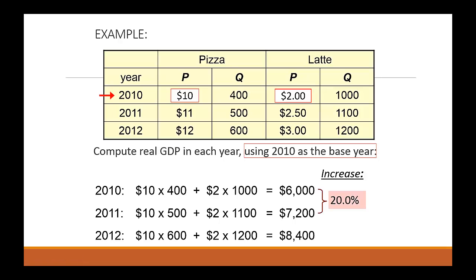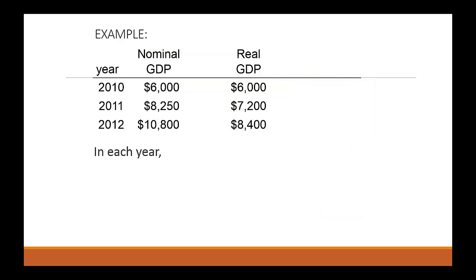Real GDP increased 20% in 2011, and it increased a little under 17% in 2012. Notice that nominal and real GDP are equal to each other in 2010, because 2010 was the base year — the current price equals the base year price. It will always be true that real and nominal GDP are equal to each other in the base year.